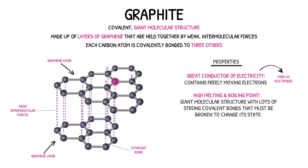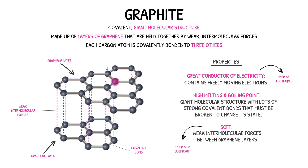Despite having a high melting and boiling point, graphite is relatively soft in comparison to other carbon allotropes. This property is the result of the weak intermolecular forces between the graphene layers, which allow the layers to slide across each other. This property explains why graphite is often used as a lubricant.